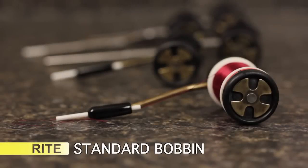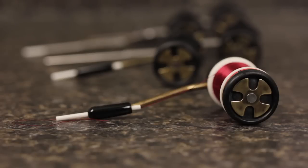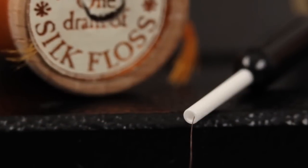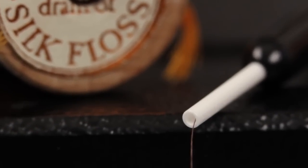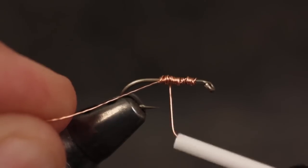The RITE standard bobbin was the first bobbin in our product line and remains one of our most popular. The small diameter ceramic tube protects delicate threads and even temperamental silks, yet the tube is so tough it's no problem to run wire or coarse materials through it.